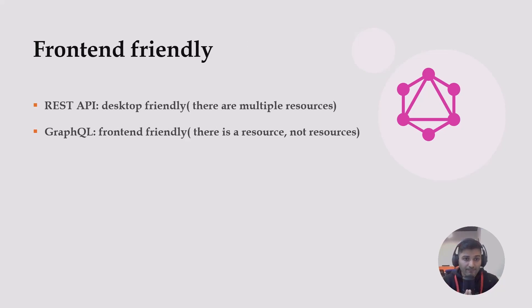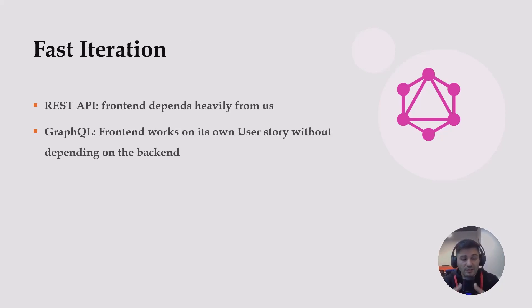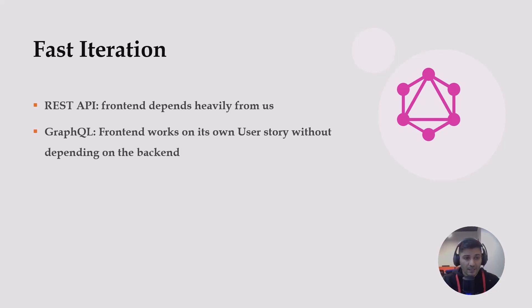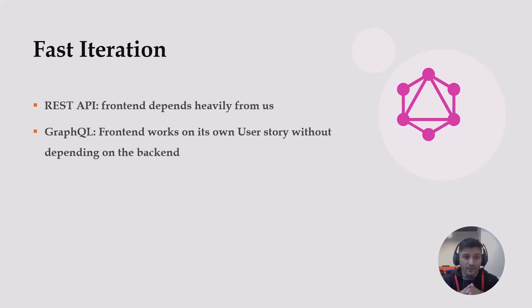GraphQL is front-end and mobile friendly — from the GraphQL perspective there is only one single resource, while REST is desktop friendly with multiple resources. GraphQL helps your development process do fast iteration. Front-end works on its own user story without depending on the backend. If you need one additional attribute from REST, you have to ask backend developers to provide it, and in production you must wait for them to implement features. But GraphQL reduces the amount of user stories related to an already implemented API.